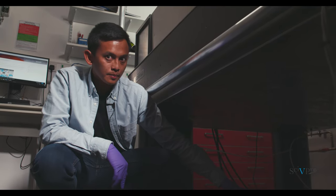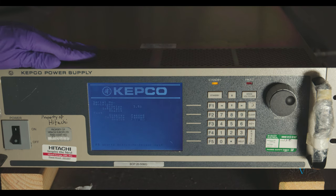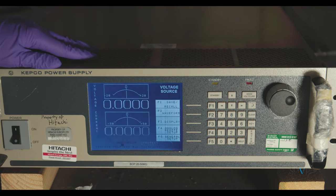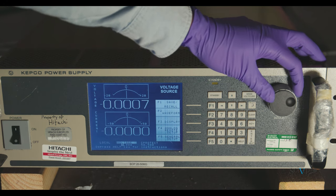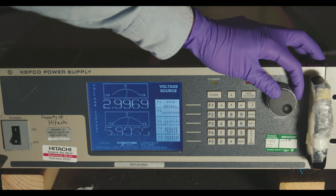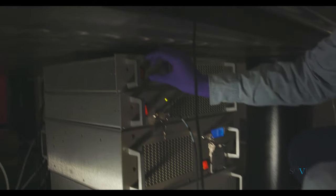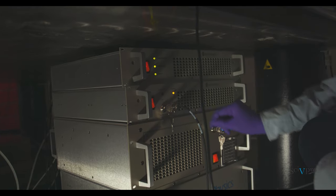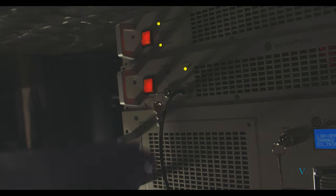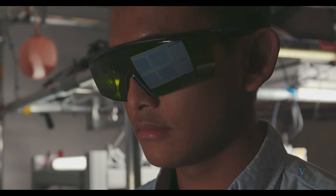Turn on the electromagnet power supply. The electromagnet is used to align the magnetization of the sample. Slowly increase the current up to 20 amperes. Wear safety goggles, switch the titanium sapphire laser power supply on, and turn the three safety keys clockwise. Activate the laser from the laser control software.